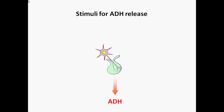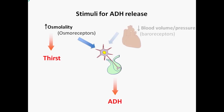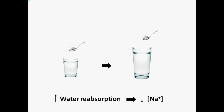There are two main stimuli for inducing ADH release from the posterior pituitary. Increased serum osmolality is one, sensed by osmoreceptors in the hypothalamus. The increased osmolality also stimulates thirst, which causes a person to drink water to correct the raised osmolality. The second stimulus is a reduced blood volume, sensed by baroreceptors in large vessels such as the carotid and aorta, as well as the atria. These compensatory mechanisms act to stimulate ADH release to ensure homeostasis is maintained.